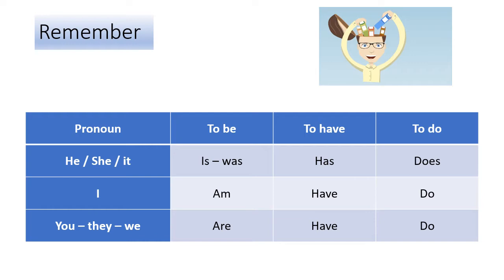Every pronoun has three kinds of relationships with to be, to have, and to do. So: he is, she is, it is; he has, she has, it has; he does, she does, it does. But: I am, I have, I do. You are, they are, we are. You have, they have, we have. You do, they do, we do. Am I right?